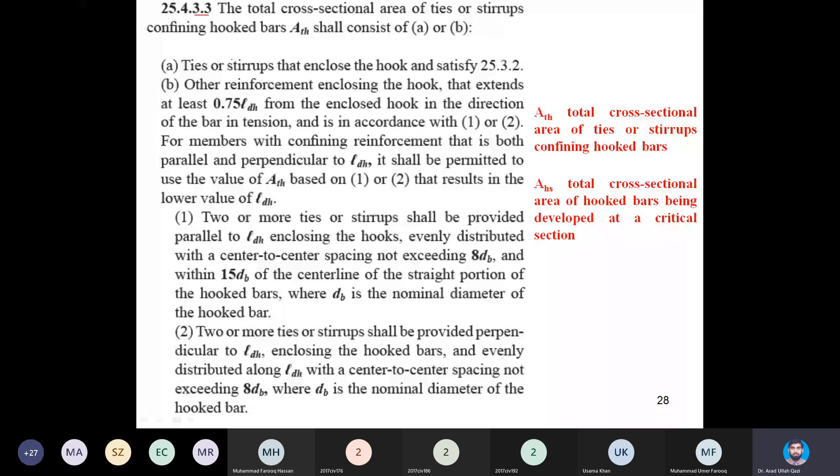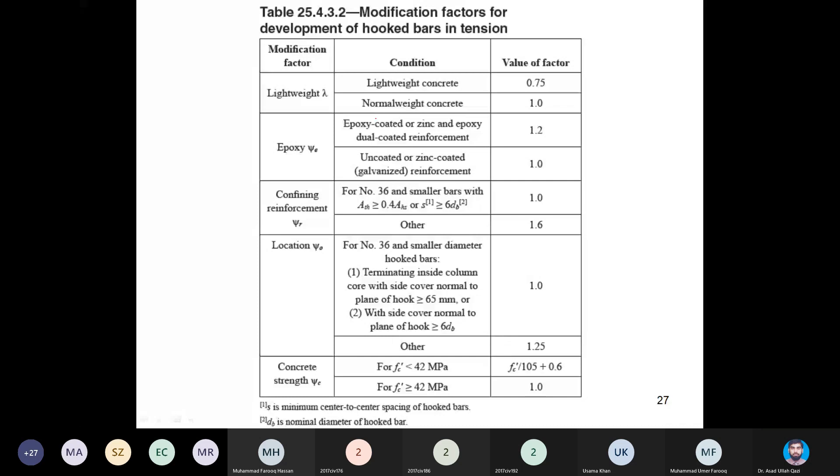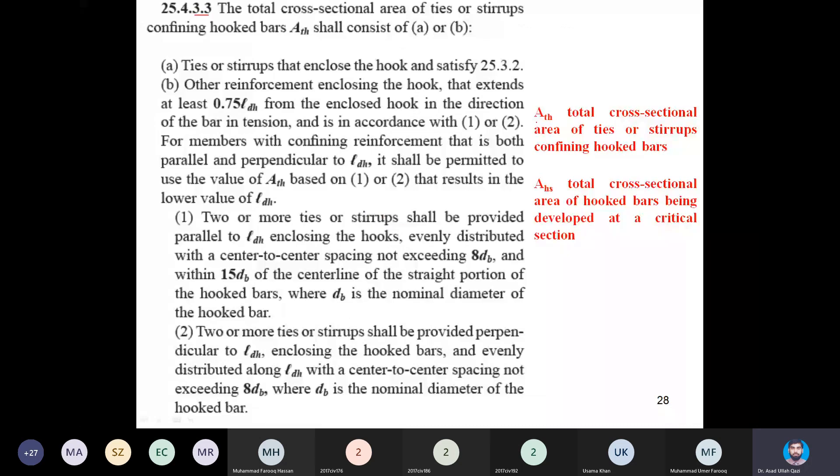It was mentioned here that ATH is greater than or at least equal to 0.4 AHS. First, briefly, it is mentioned in red color here. ATH is the total cross-sectional area of ties or stirrups confining hook bars, and AHS is the total cross-sectional area of hook bars being developed at the critical section.